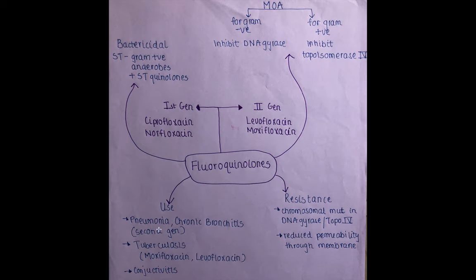Second-generation drugs — moxifloxacin and levofloxacin — are used in pneumonia and chronic bronchitis, and in treating respiratory infections like tuberculosis. In general, fluoroquinolones can also be used to treat conjunctivitis.